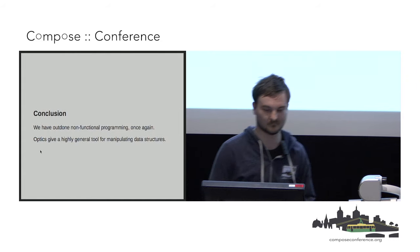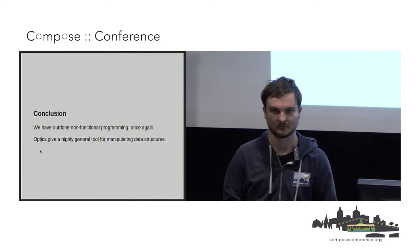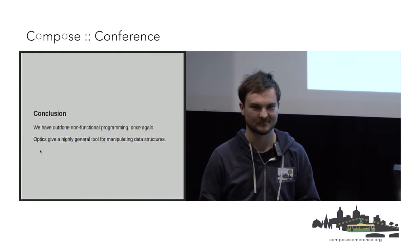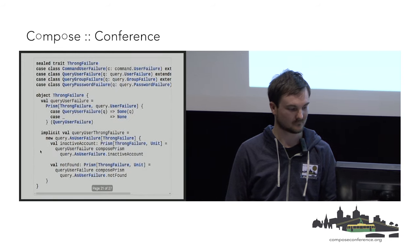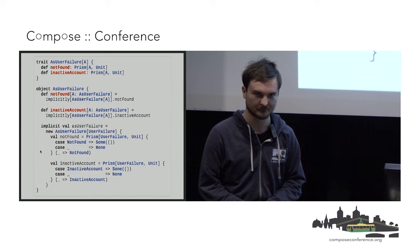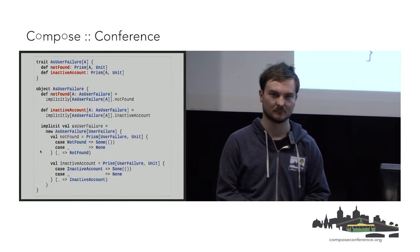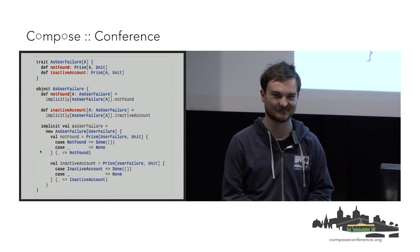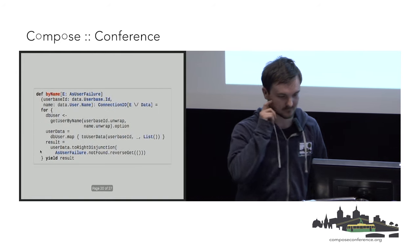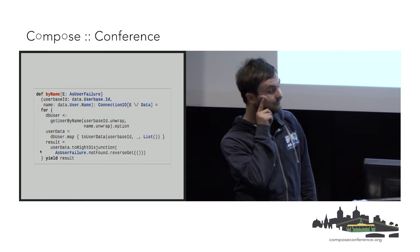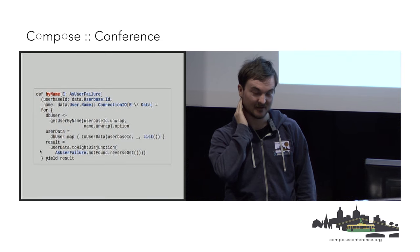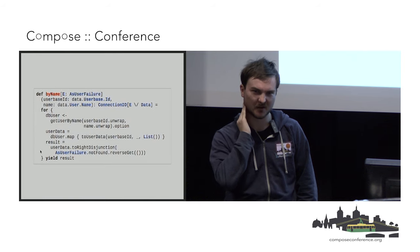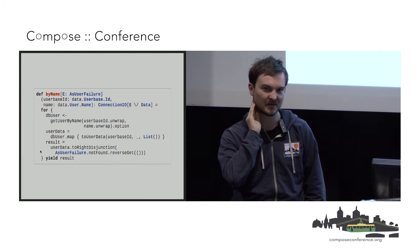Q: You showed the classy optic technique for errors using a prism to put things into the proper error type. To what extent have you had success with that technique in Scala? Is it only for errors, or do you do it for things like config as well? A: Only with errors is how we've done that. I don't think we really tried to do it with configuration, and I'm skeptical it will work because of type inference — once the types get too hard to type out, it's not really worth it.